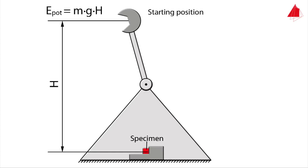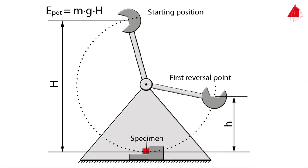After the pendulum has been released the hammer moves downwards, hits the specimen and then only swings to height small h. Exactly at the first reversal point the pendulum again only has potential energy which is m times g times small h.